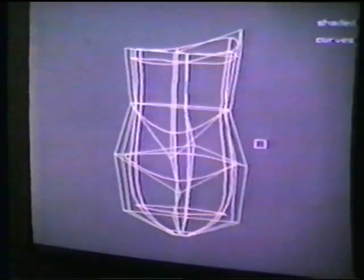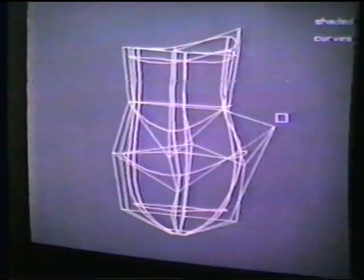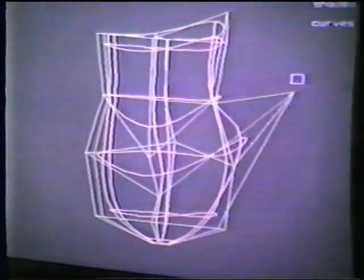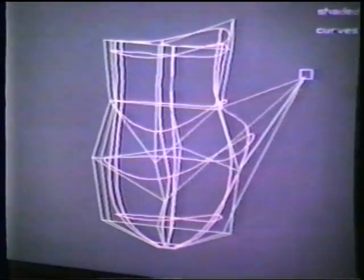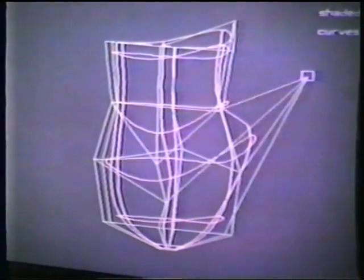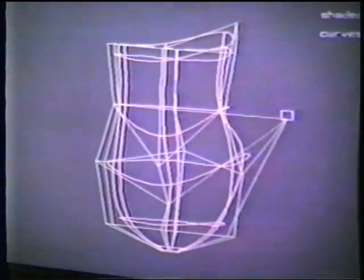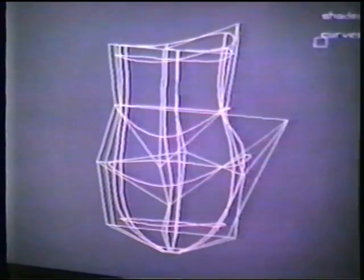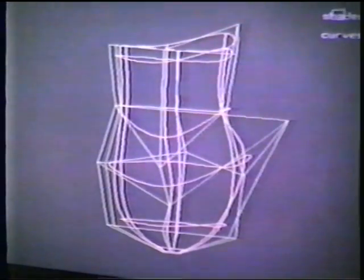Here's that display of bicubic patch data again. Here the user can take a data display tablet, select a particular control point, and move that control point around. In red you see the outlines of the bicubic patches, and when the user wants to take a look at a hidden surface view, it can be quickly put up on the screen.